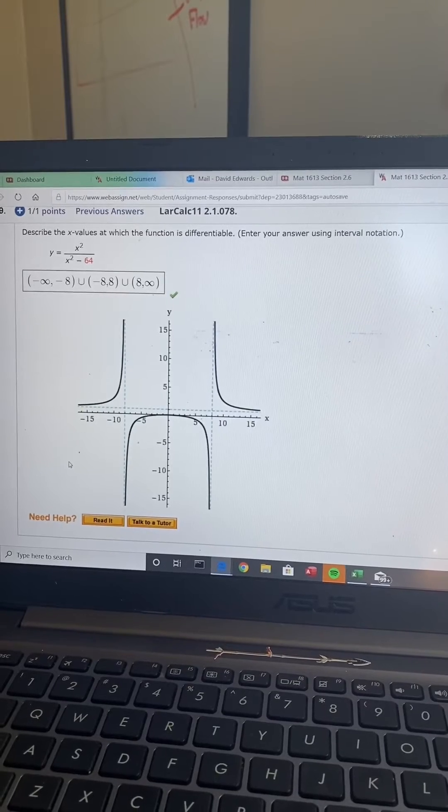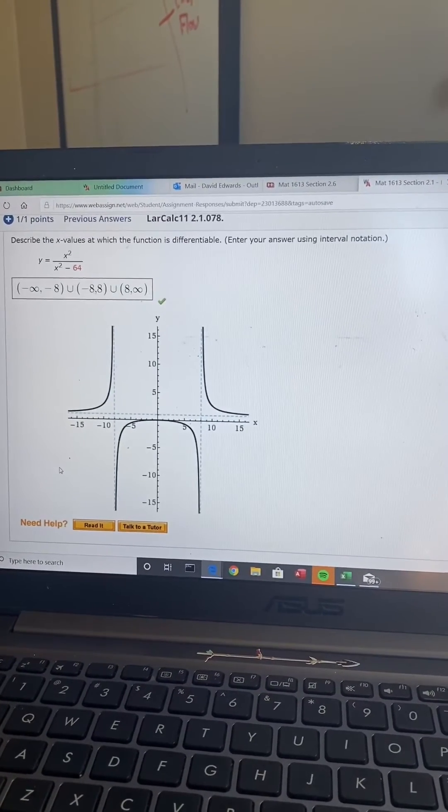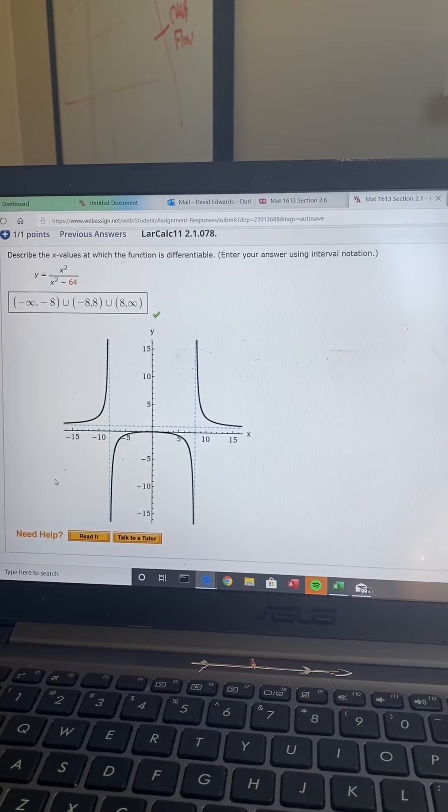So in this problem right here, you have x squared over x squared minus 64. Notice when you break down the x squared, you can have two binomials, x minus 8, x plus 8.